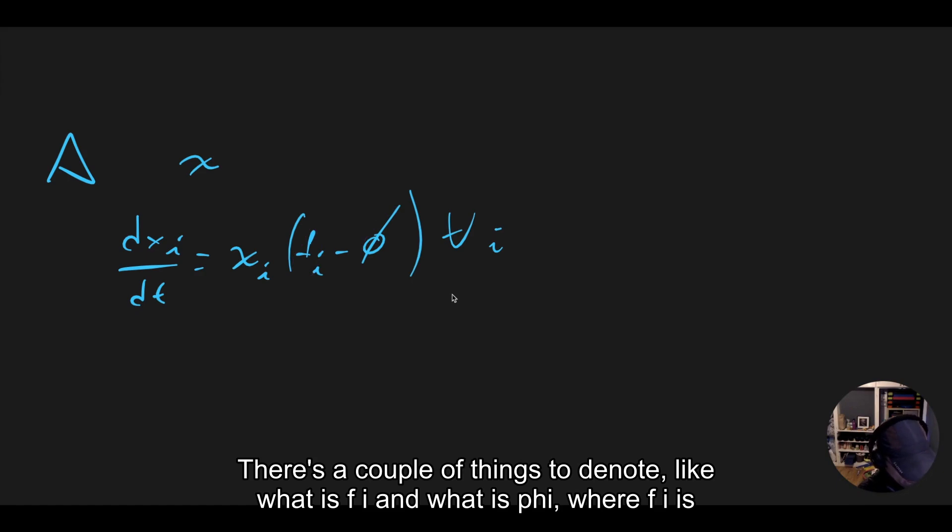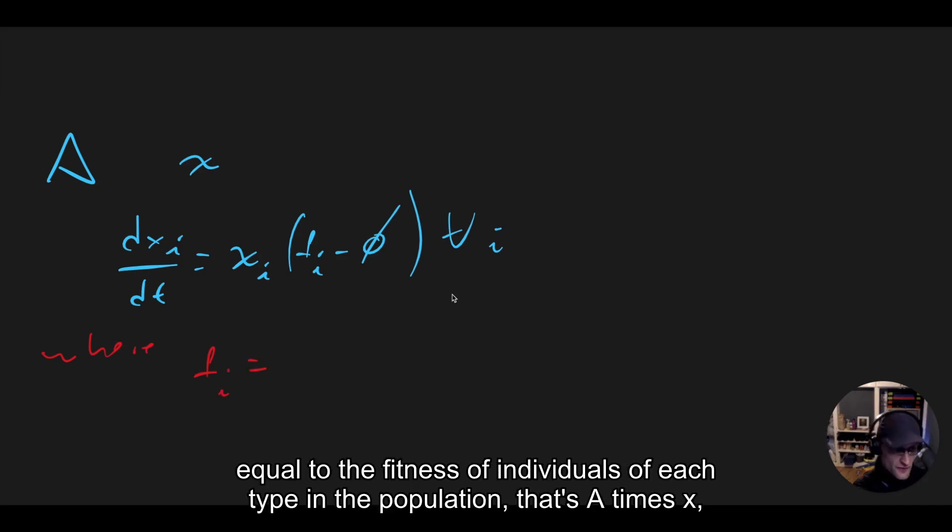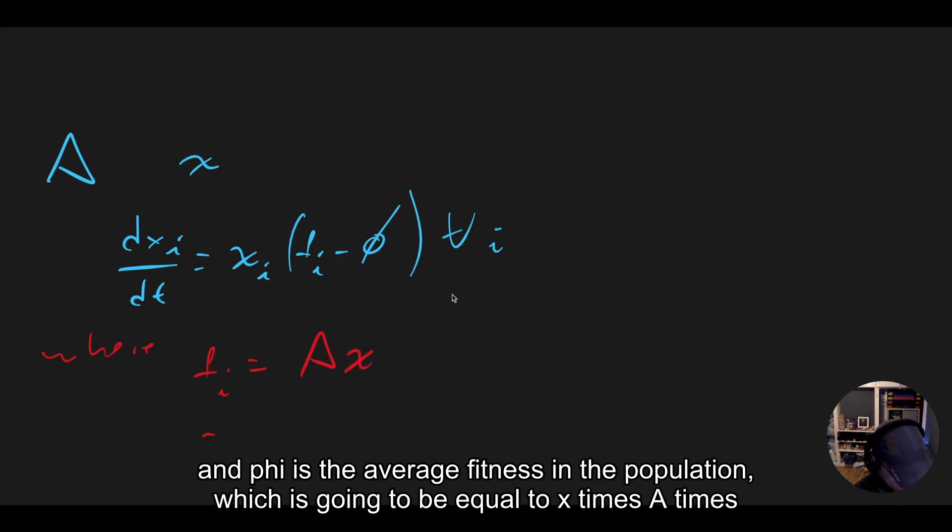Well, f_i is equal to the fitness of individuals of each type in the population, so that's Ax, and phi is the average fitness in the population.